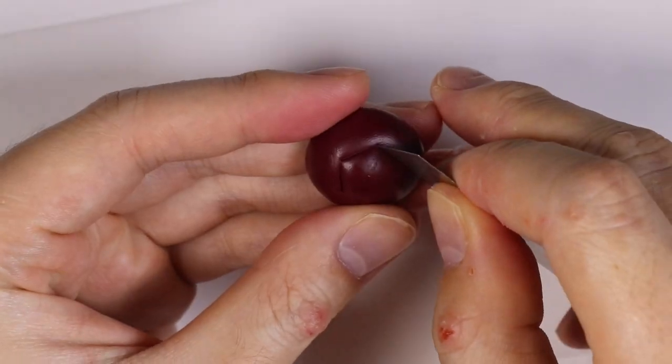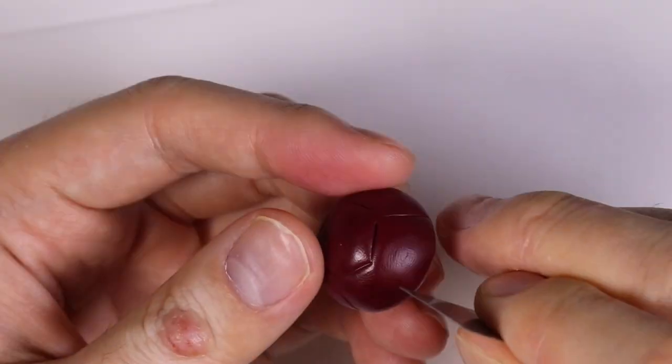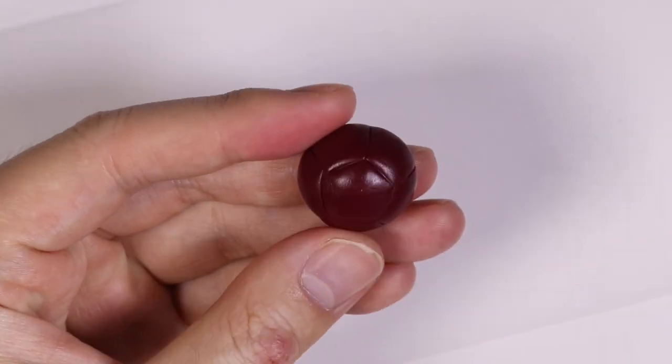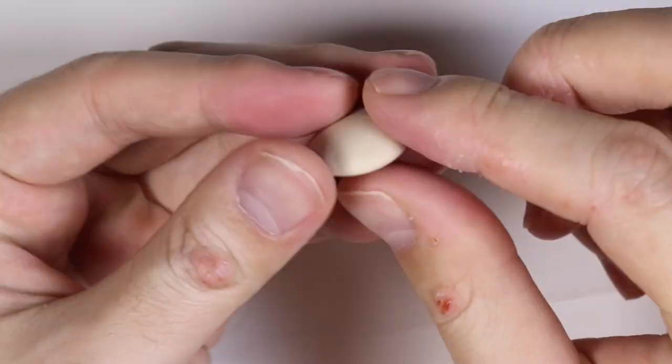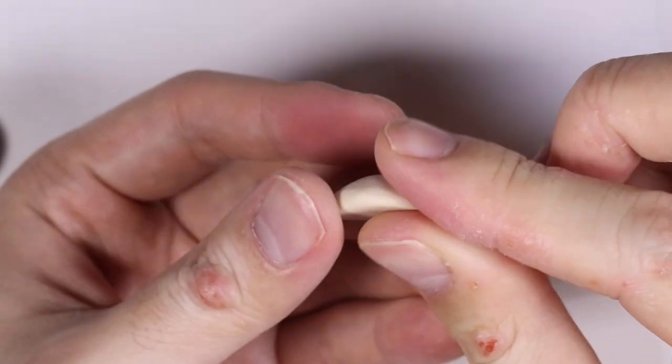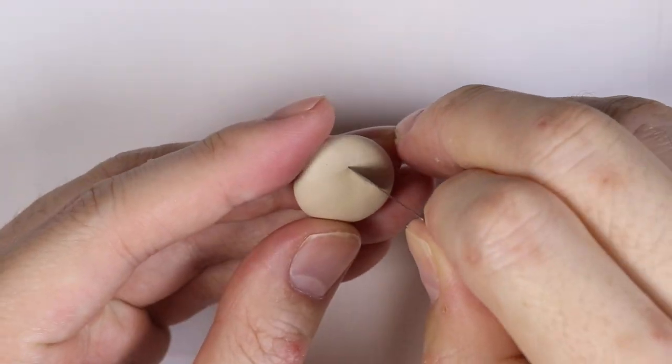Then I'm going to make some pentagon shapes for the shell design using my polymer clay blade. Next we want to make a slightly flatter dome for the under shell using some beige clay, and we're going to make the same kind of markings that we did on the shell.